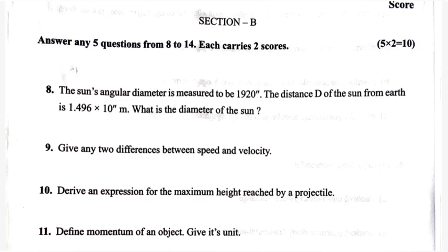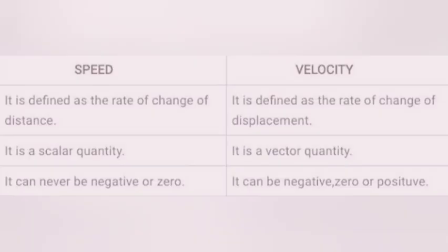Question 9: Give any two differences between speed and velocity. Answer: Speed is defined as the rate of change of displacement. It is a vector quantity. It can be negative, zero, or positive.